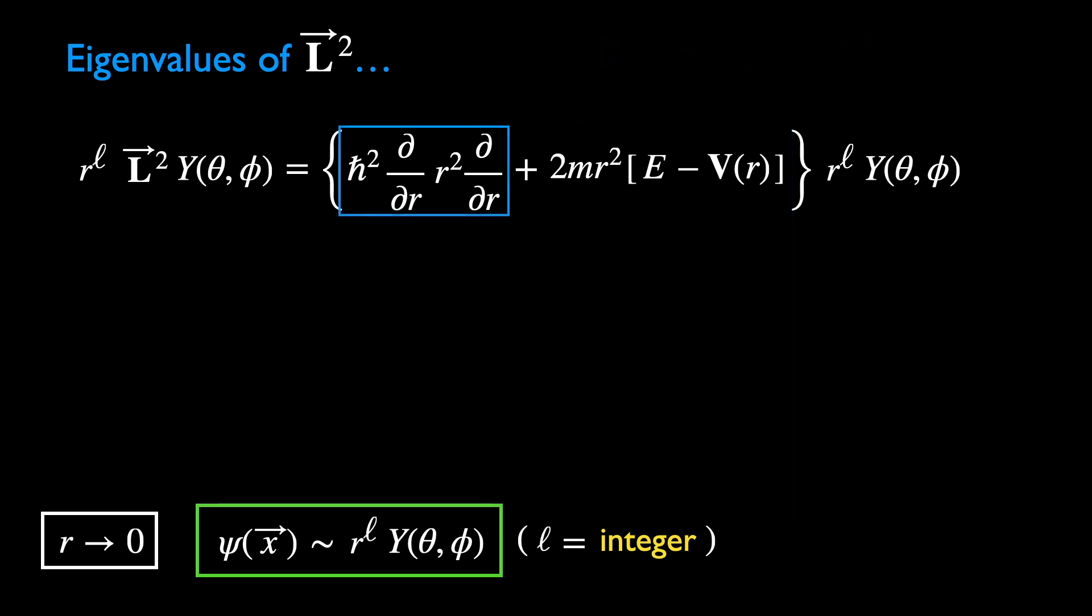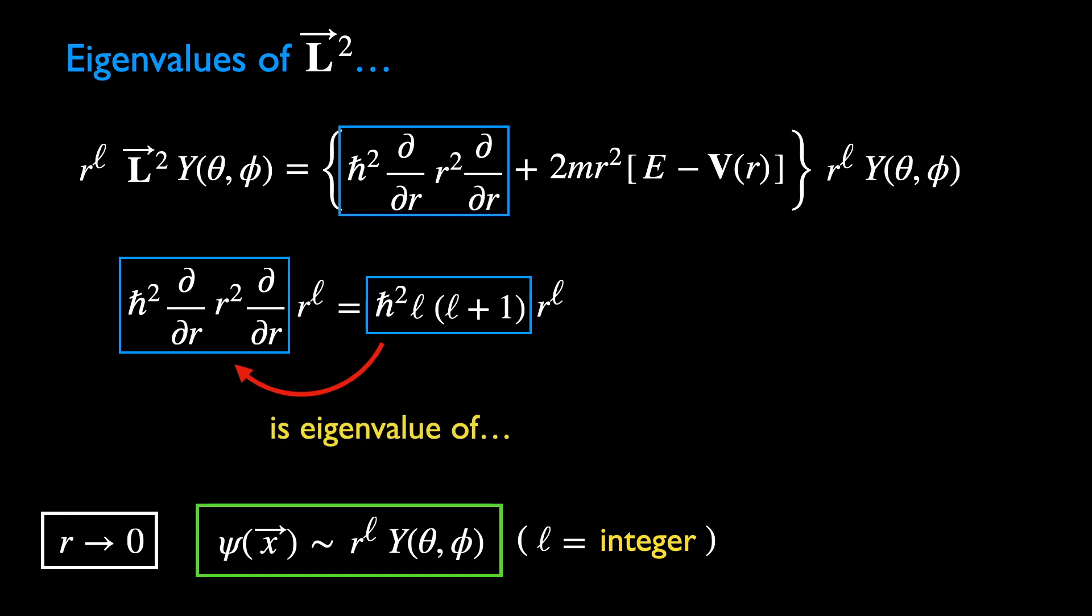The effect of the first term is as follows. The derivative in the yellow box is given by... And the second r-derivative gives... This is the effect of the first term on r^l. The number h-bar times l times l plus 1 is like the eigenvalue of this r-dependent operator. This is also the eigenvalue of the operator L-square as we have advertised in the beginning. Now we shall see why.